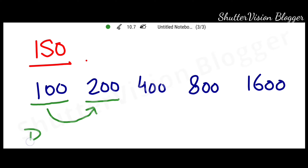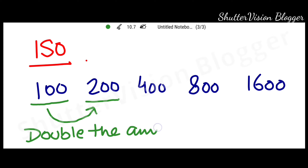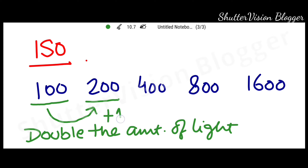But how much light is increasing? We are doubling the amount of light. In other words, we call it that we are adding one stop of light to the image.